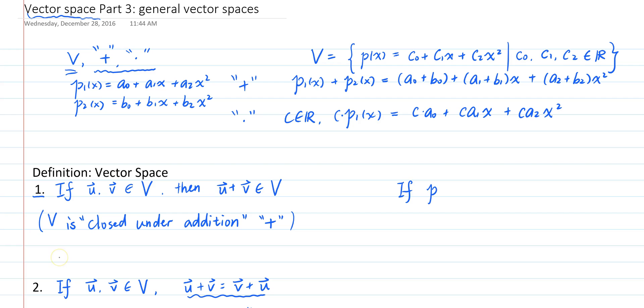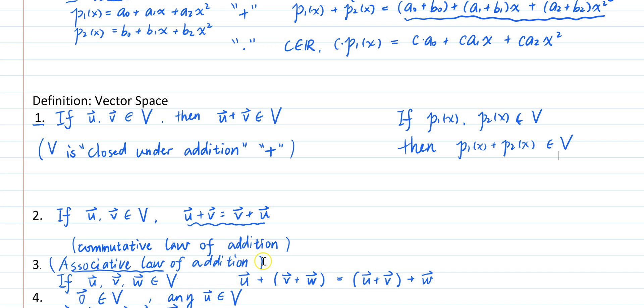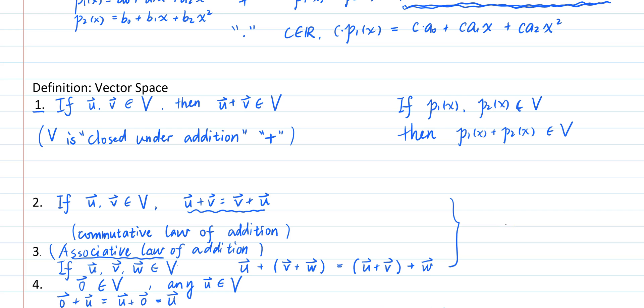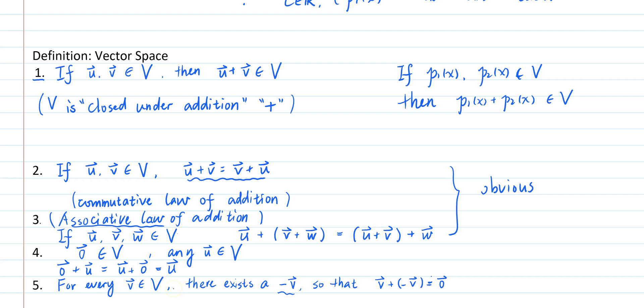First of all, if you have two polynomials of degree 2 or less, then as evident by this expression, their sum is still a polynomial of degree 2 or less, therefore still in the set V. Then the second and third properties are again obvious, because addition is done term by term, and the commutative and associative laws of addition of real numbers just carry over.